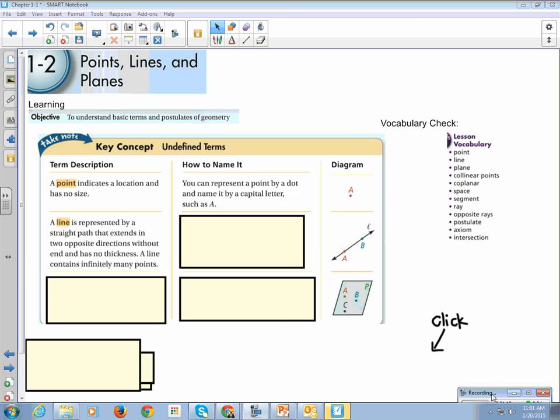A line is represented by a straight path—hint, use a ruler when you draw one—that extends in two opposite directions with no ends. A line has an arrow on each side to indicate it goes on forever. Something that goes on forever has no length. It's infinite. So it is also considered an undefined term. It has no end and no thickness. A line contains infinitely many points.